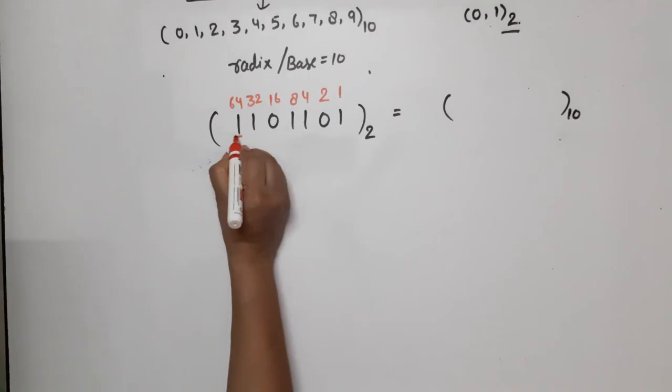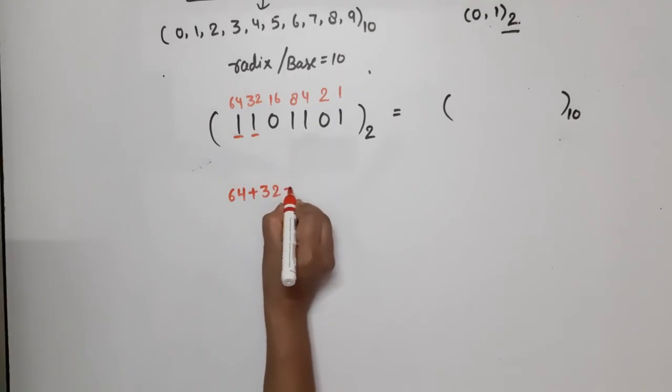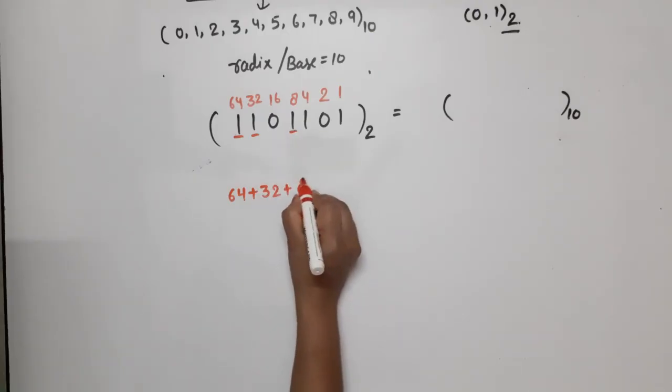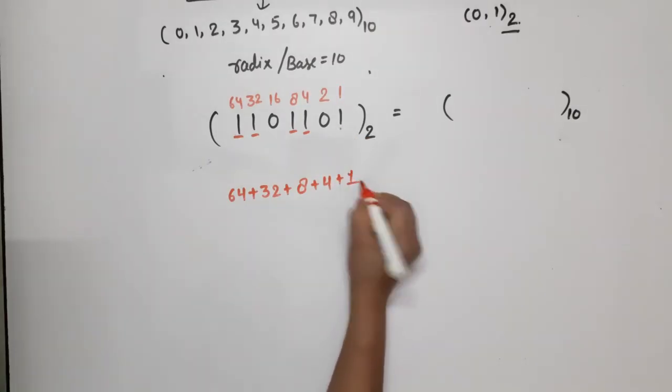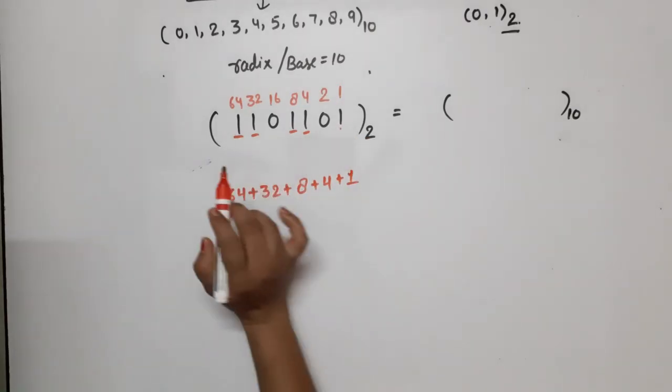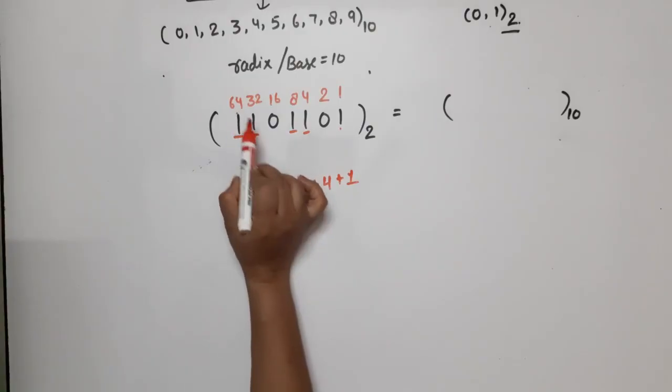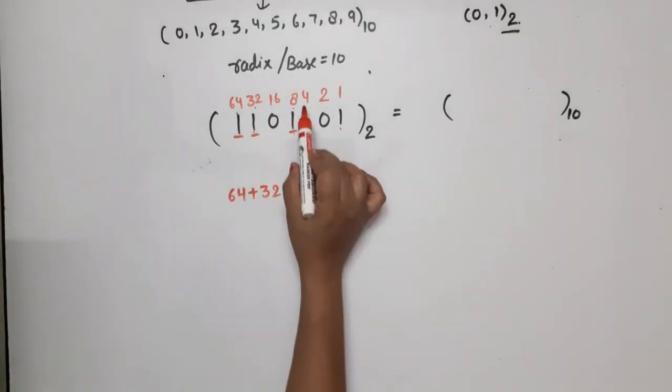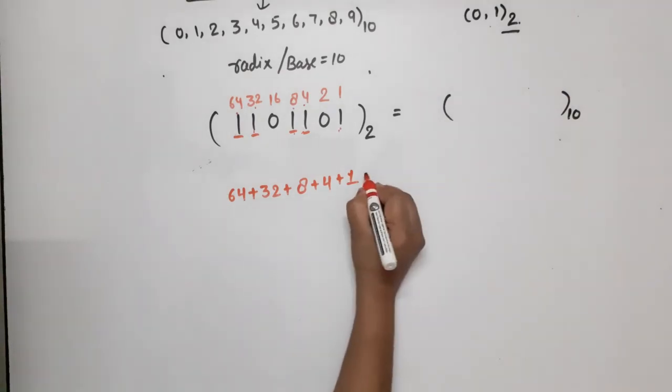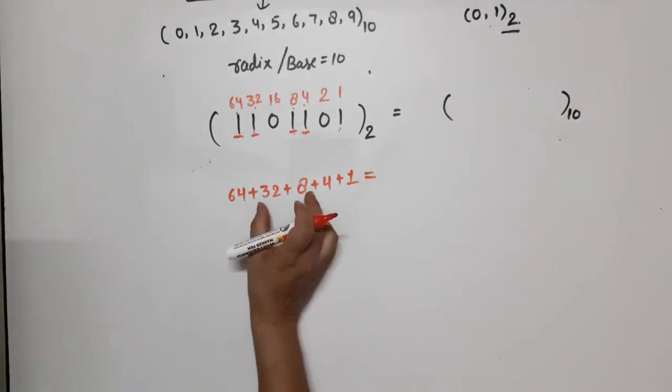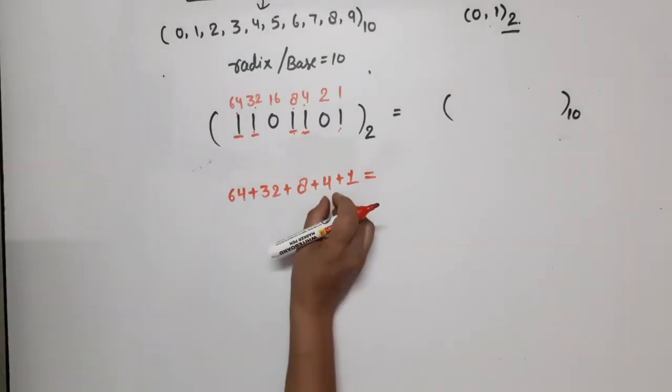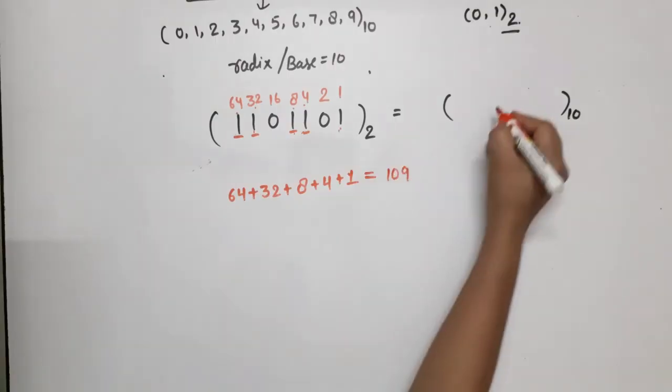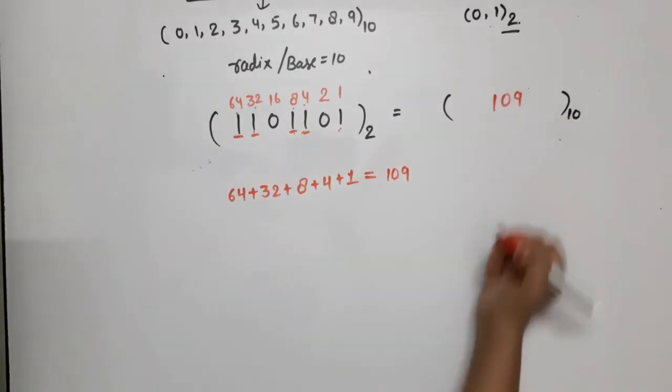Now let's sum. This is 1, so 64 plus - 32 is available so 32 added, 8 is available so 8 added, 4 is available so 4 added, 1 is available so 1 added. See what is available, it will be plus. It's corresponding to 64, 32, 8, 4, and 1. Now add these numbers. 32 plus 8 is 40, 40 plus 64 is 104, plus 4 is 108, plus 1 is 109. So the answer is 109 base 10.